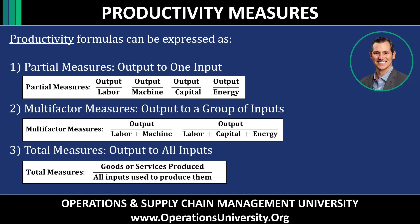The third and final formula calculates total measures. Total measures is useful when you are comparing total output for a factory on a year-over-year basis, because there are so many different inputs that are critical to productivity. It can also be used to measure the output of an entire economy.